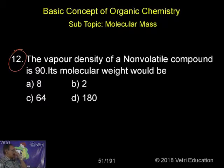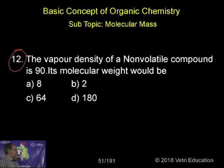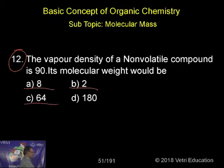The vapor density of a non-volatile compound is 90. Its molecular weight will be — A: 8, B: 2, C: 64, D: 180.